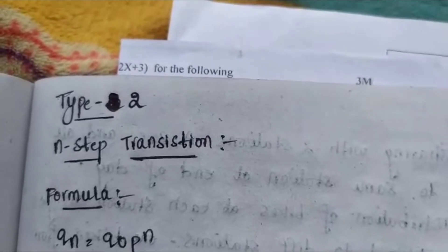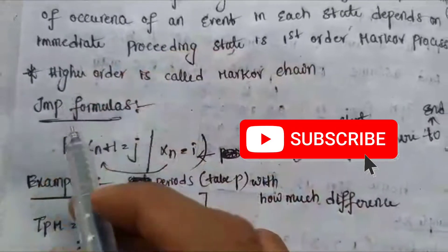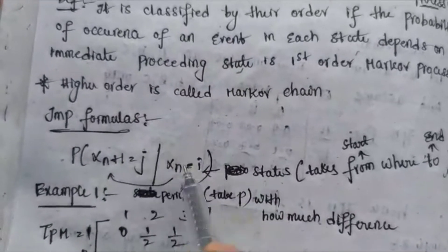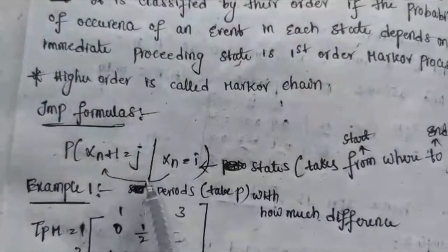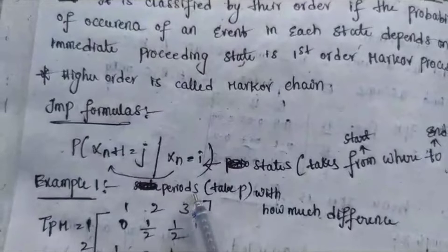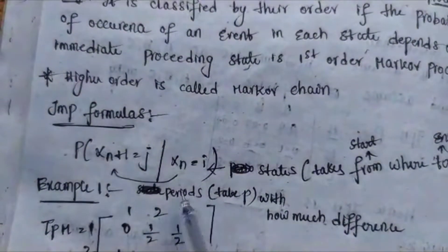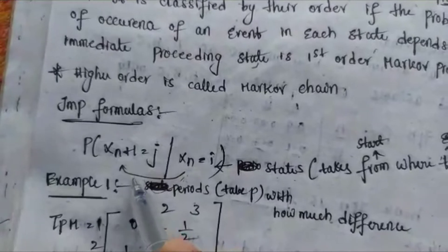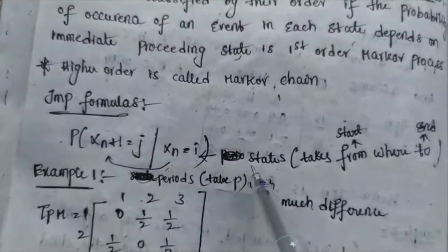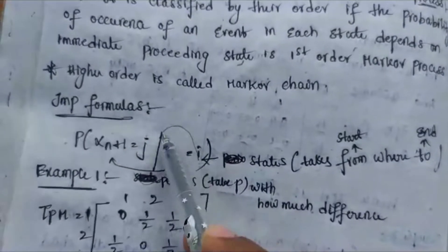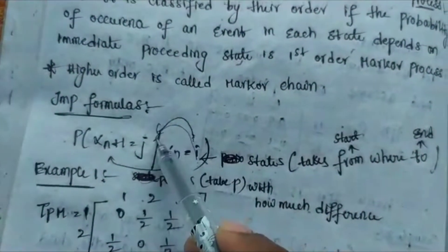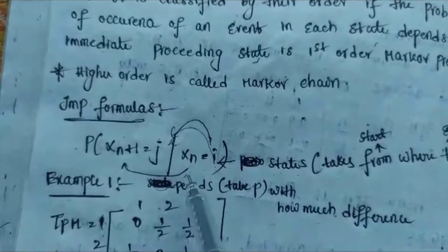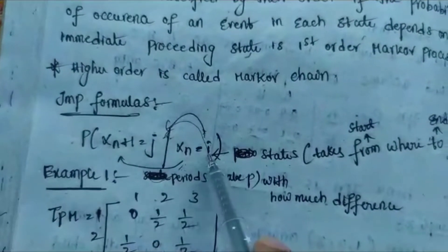The important formula in n-step transition is P(Xn+1 = j | Xn = i). Here Xn+1 and Xn are periods, and we take the difference between them from left to right. i and j indicate the states, which also go from left to right. To solve n-step transition problems, always remember that both the periods and the states are taken from left to right.